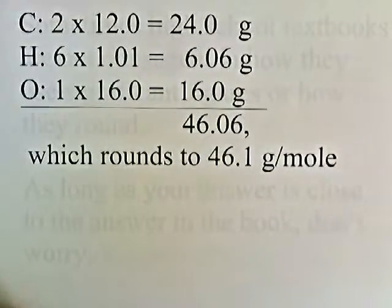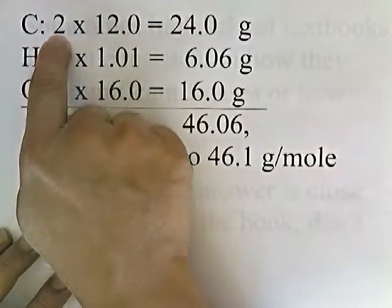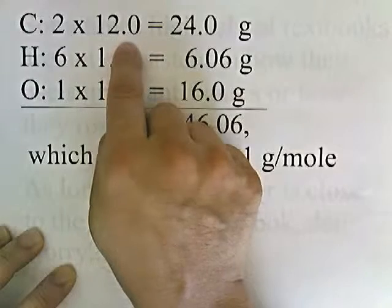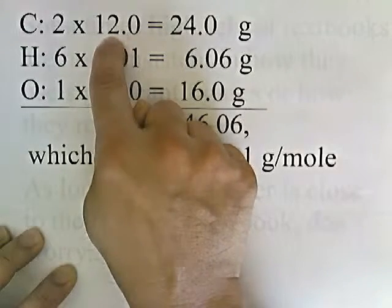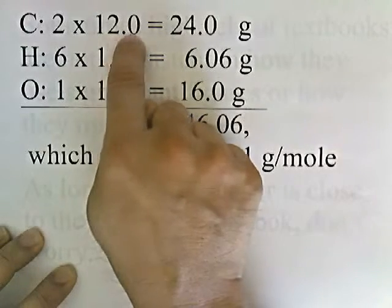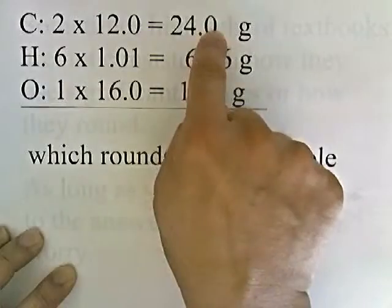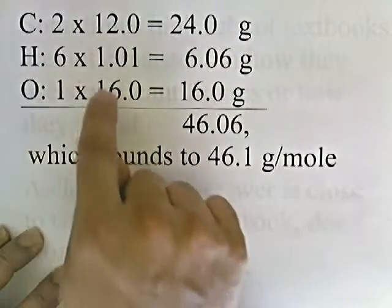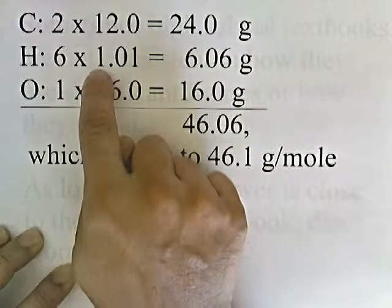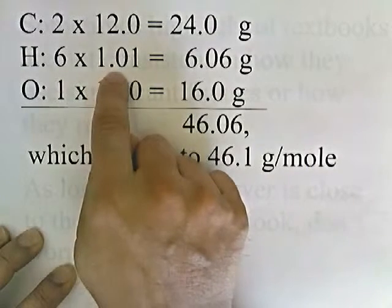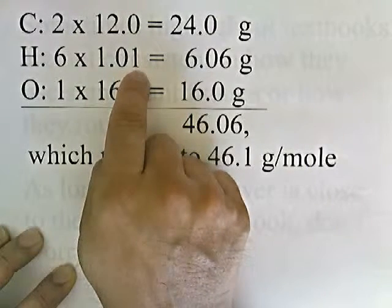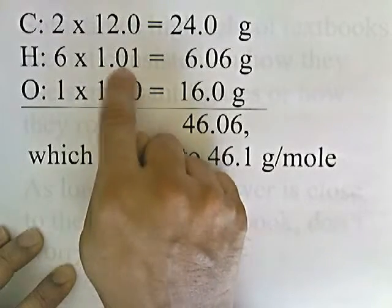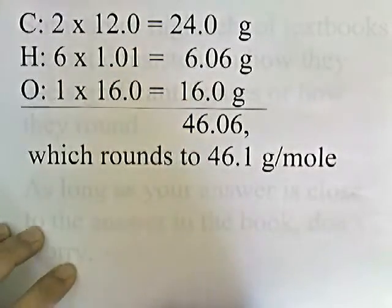Ethanol has two carbons. The periodic chart lists carbon as 12.011, but we only take three significant figures, so we write 12.0. Two times 12.0 is 24. Hydrogen: there are six hydrogens in the compound, and hydrogen has a molar mass of 1.008 on the periodic chart, but rounded to three significant digits that becomes 1.01.